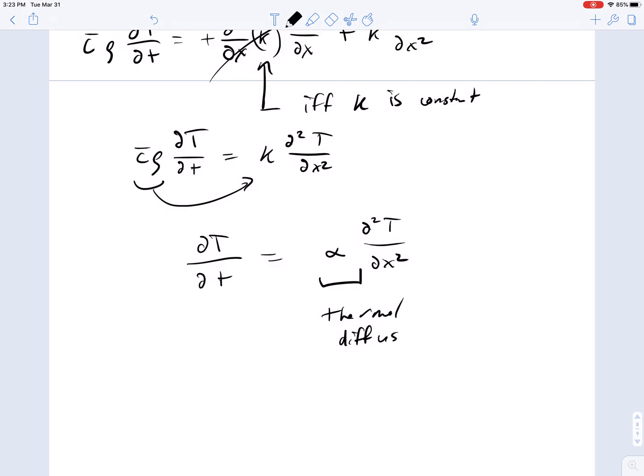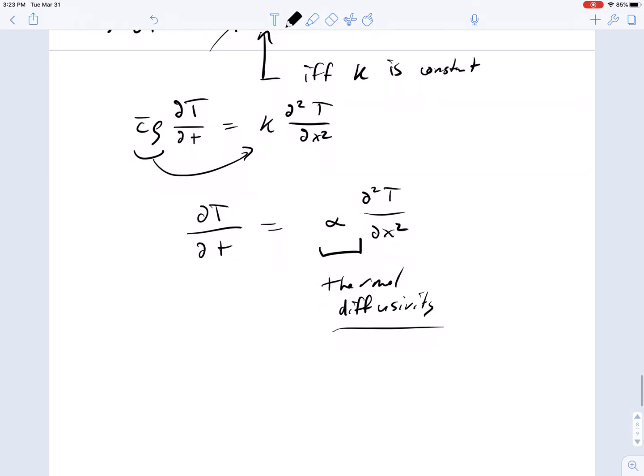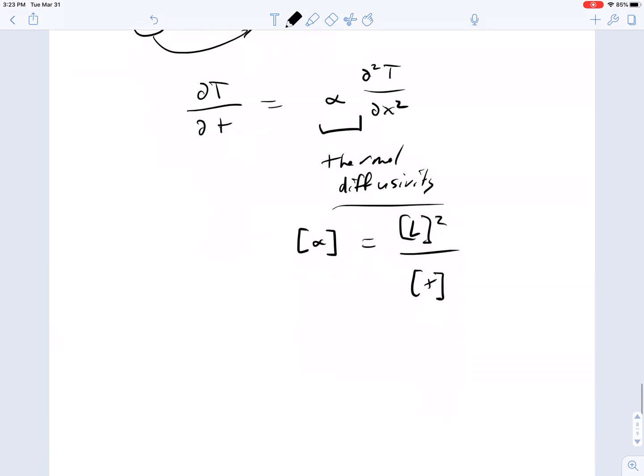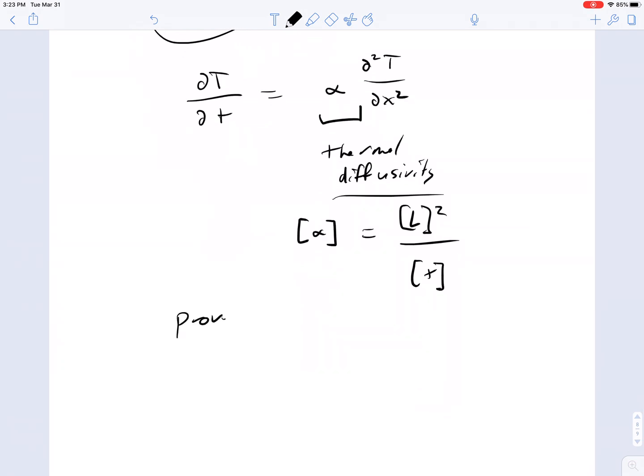And you'll find soon that this has the exact same units as the diffusion coefficient for mass flow. The units of the thermal diffusivity are length squared divided by time. As an exercise, prove this is unit consistent.